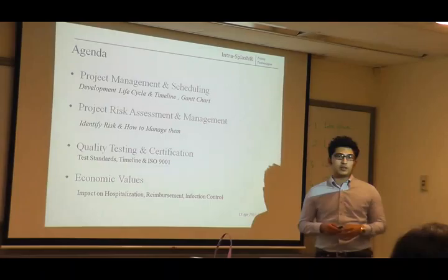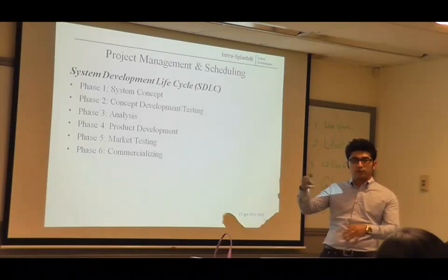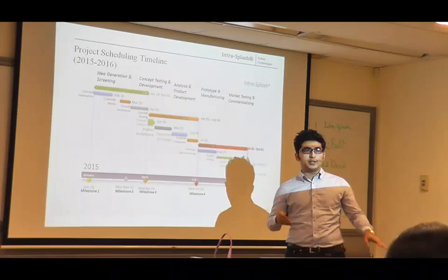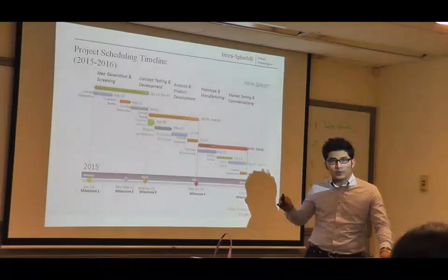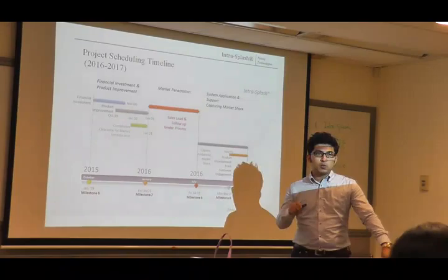Today I'd like to share about our project management, quality assurance, and economic value creation. For project management we followed a system development life cycle with six phases, broken down into a timeline. We've planned for two years, 2015–2016, and a subsequent year 2017. We are currently at the stage of prototyping, and will go for manufacturing, quality testing, and a broader launch in January 2016.